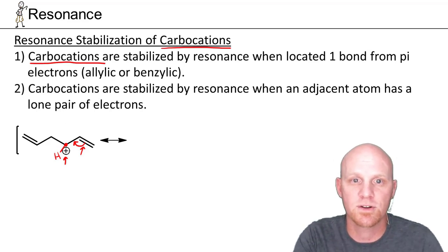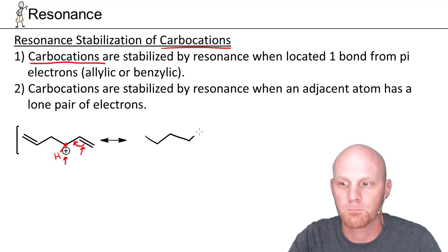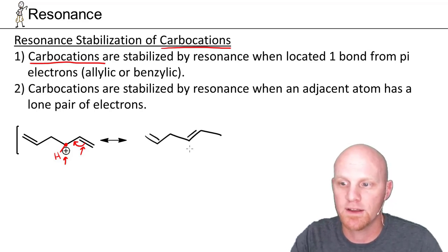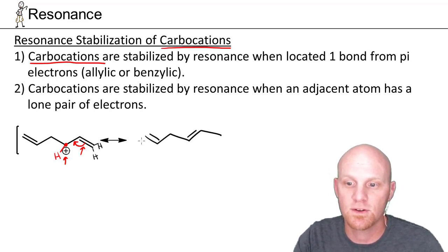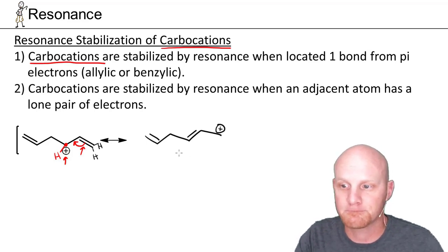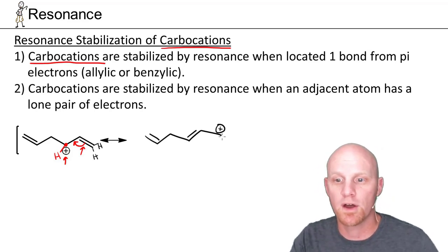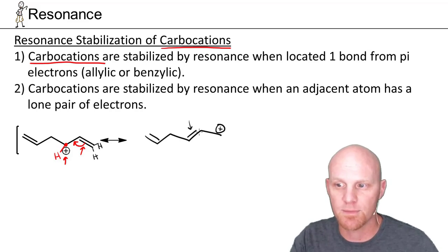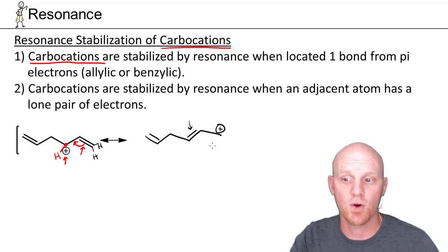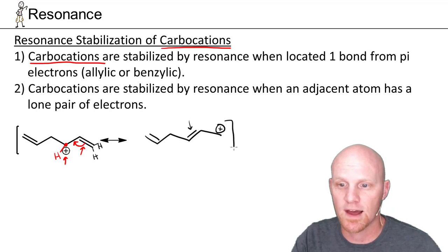Looking at the resulting structure, we still have the other pi bond, and now we have a new pi bond here. This carbon has one hydrogen and now has four bonds — it's no longer a carbocation. But the other carbon with only two hydrogens now has only three bonds, so it is our new carbocation. We have to ask: is it one bond away from any additional pi electrons? It's one bond away from the pi electrons we just moved, but no additional ones, so we have no further structures to draw — this is our last resonance structure.